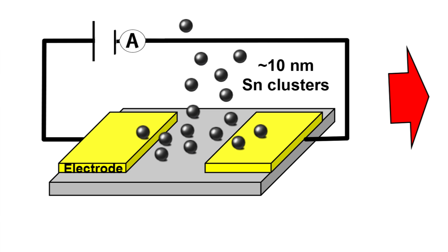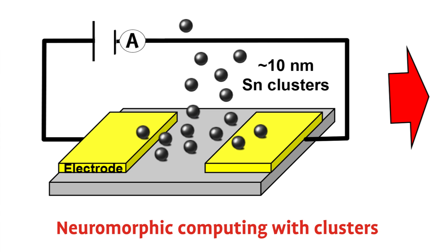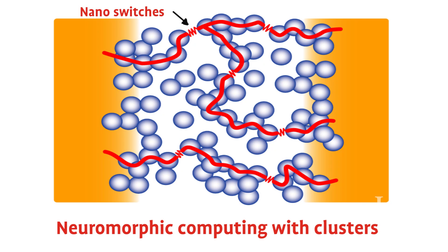What we're doing is we're throwing a bunch of nanometer-size balls on a flat surface, and when they go to the surface, these balls make a random structure.